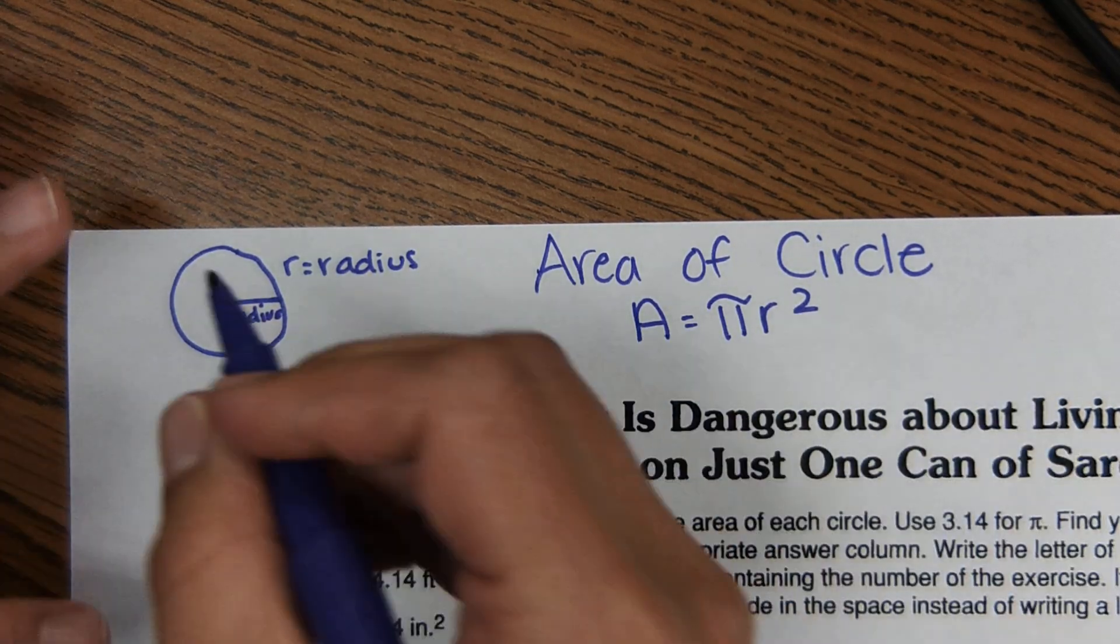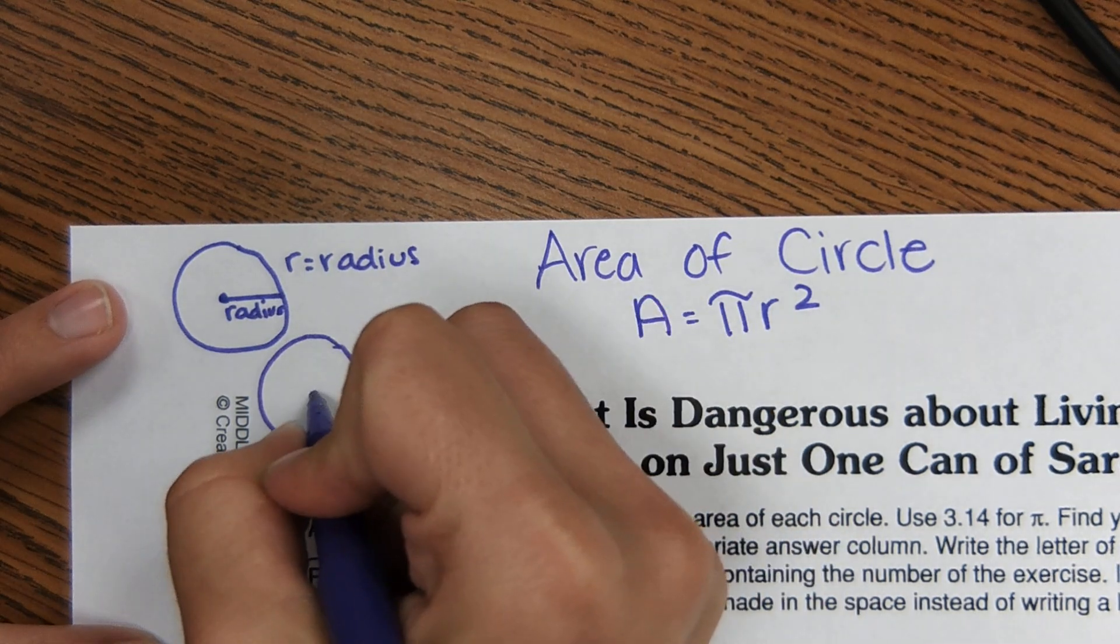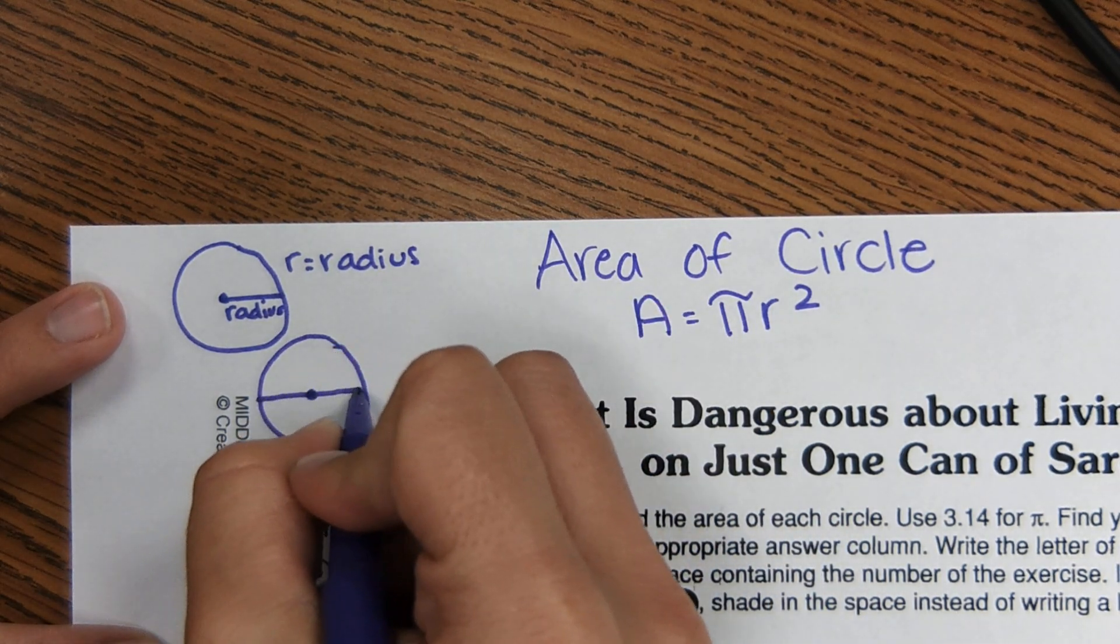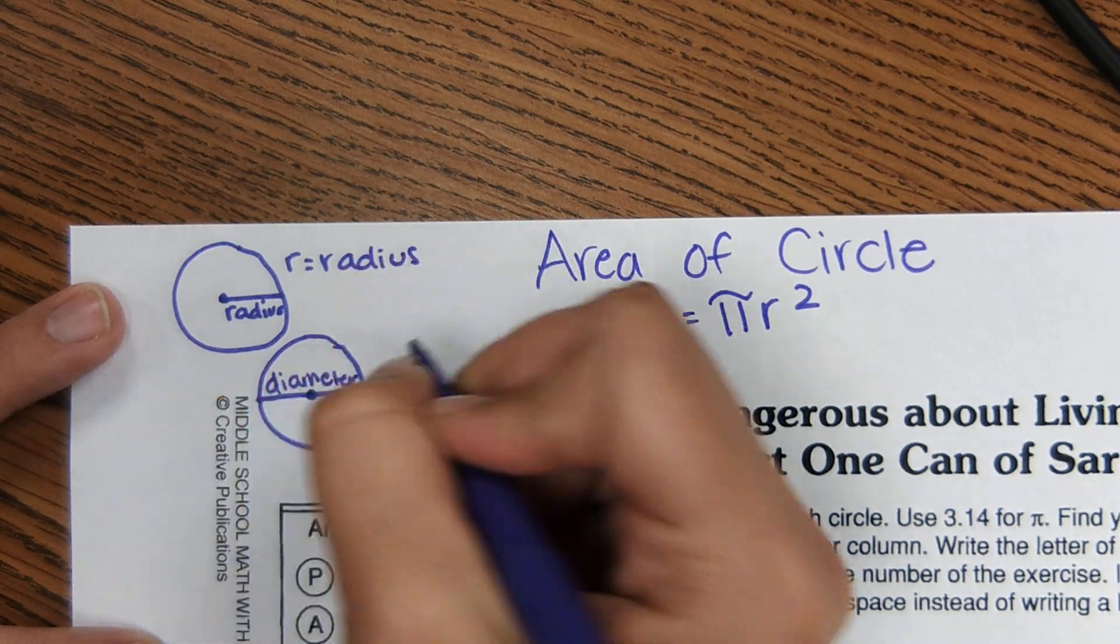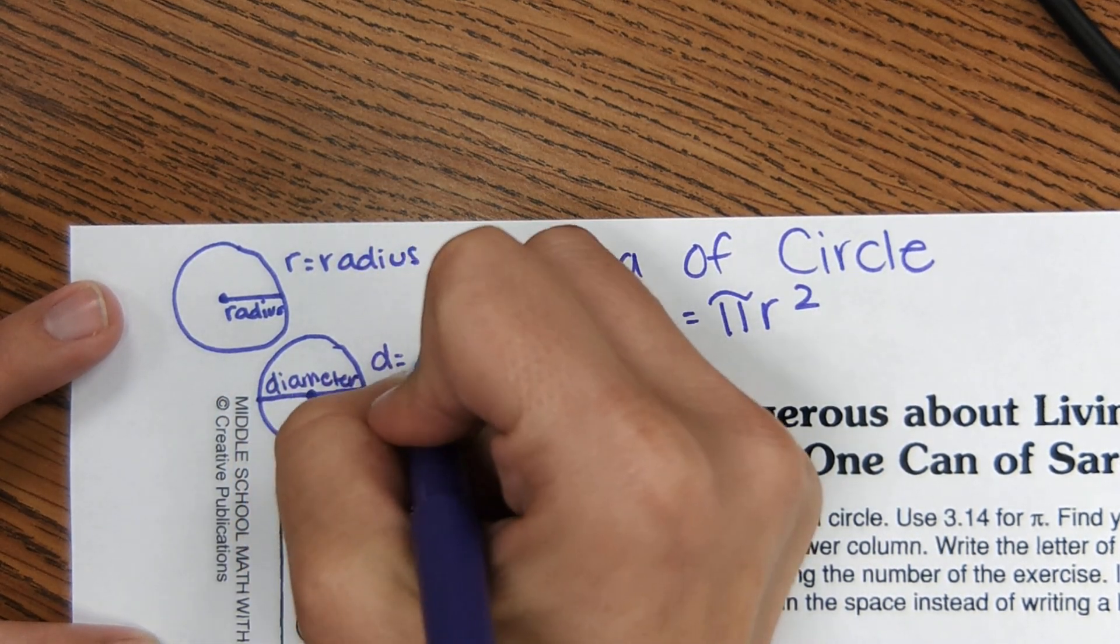And then the other thing that you need to know is that all the way across the circle through the center is diameter. Diameter is all the way across the circle. D equals diameter.